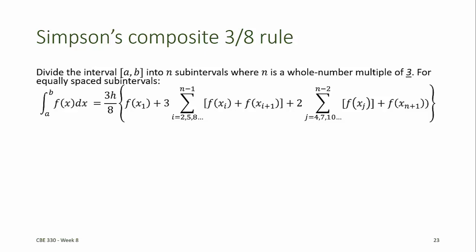To accomplish this, the interval a to b must be divided into n subintervals where n is a whole-number multiple of 3. For equally spaced subintervals, the Simpson's 3/8 composite estimate includes the first and last data points, 3 multiplied by every third data point starting with the second and third data points, plus 2 times every third data point beginning with the fourth data point. This is because the second and third data points are on the interior of a subinterval, while the fourth and seventh data points are on boundaries between subintervals. The Newton-Cotes formulas can also be written for non-equally spaced data, but the formulas become more complicated because we cannot factor out the subinterval width h.